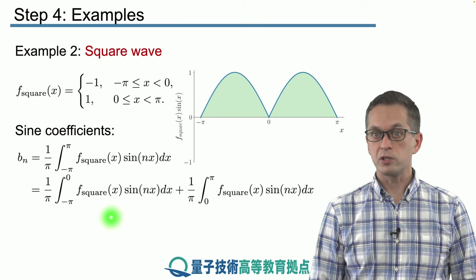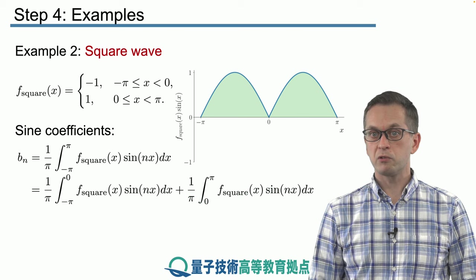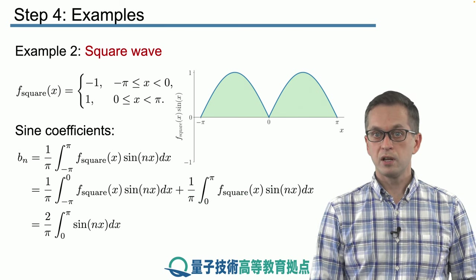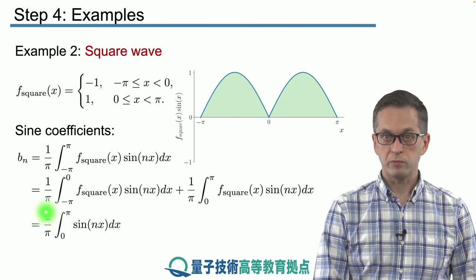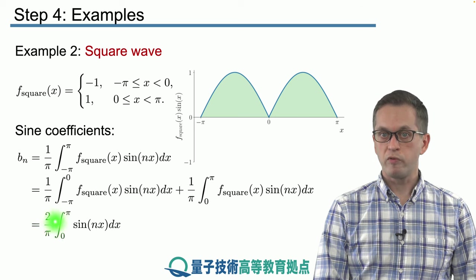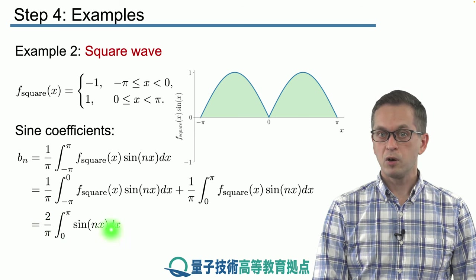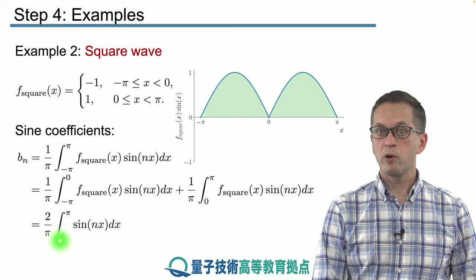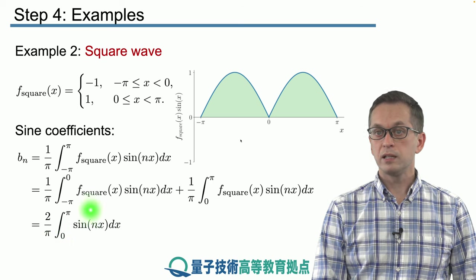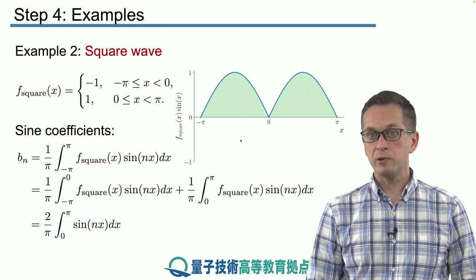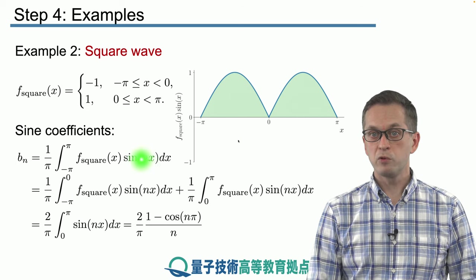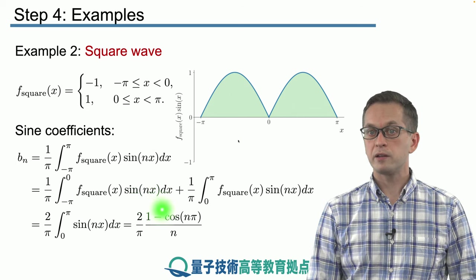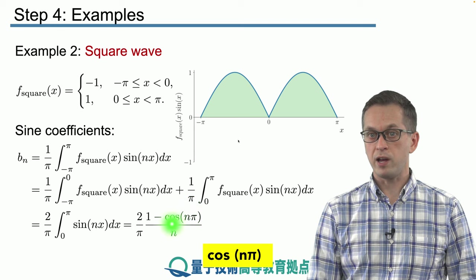So what we can do is we can just rewrite the sum of these two integrals as a single integral. So now we have 2 over π times this integral of sin(nx) going from 0 to π. This we can easily evaluate and it's equal to 2 over π times (1 - cos(nx)) over n.